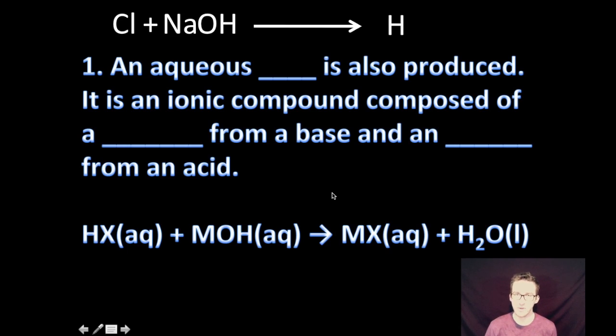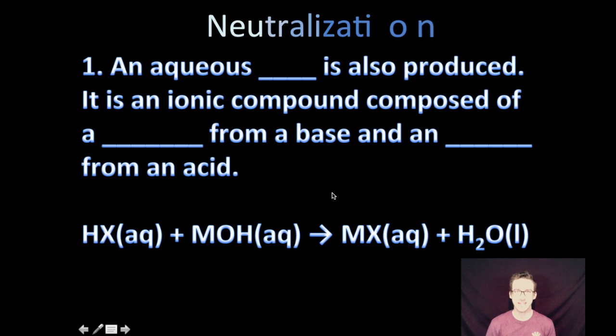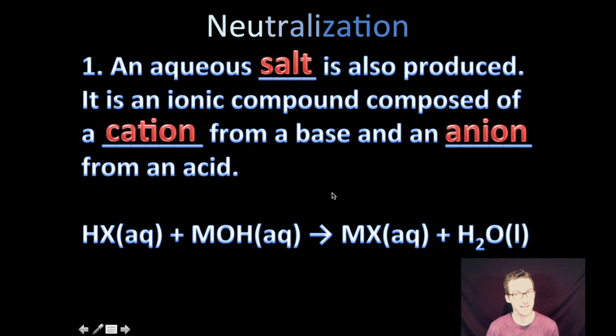Okay, so we are also going to produce, in addition to water, an aqueous salt. It is an ionic compound composed of the cation from a base and the anion from an acid. It's really important that you don't always think of salt as sodium chloride. Although this is the common salt that we shove on all of our food, there are many ionic salts out there that just have to have a cation and an anion.